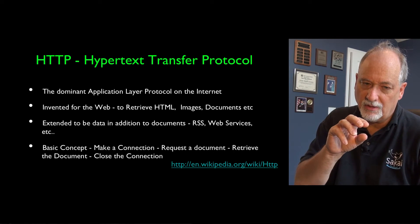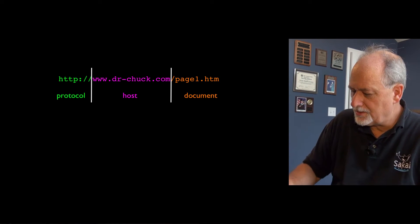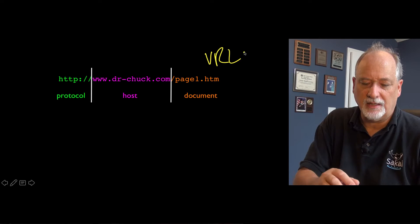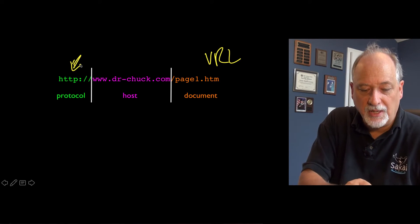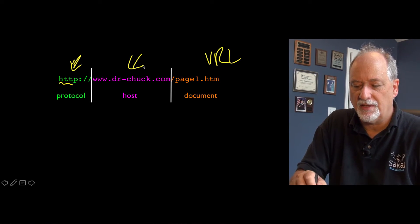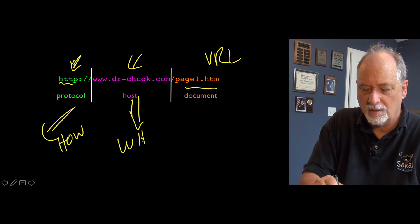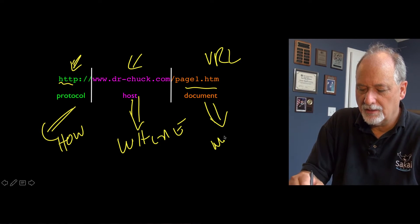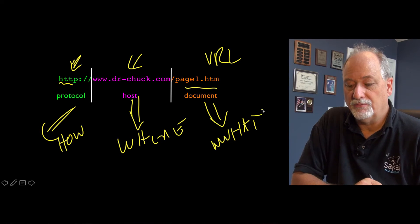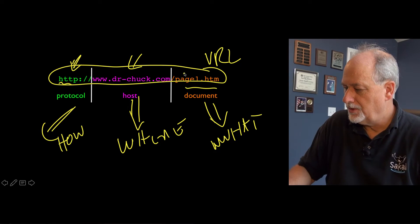The basic concept is you connect to a server, navigate and grab a document, and get the document back. The other tremendous innovation was the URL. The idea of the URL is it captures three basic ideas: what kind of protocol we're going to use (HTTP), a host that you're going to connect to, and a document that you're going to retrieve — this is how, this is where, and this is what. That's the Uniform Resource Locator: you know what to get, where to get it, and how to get it, all in one long string.